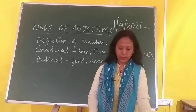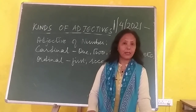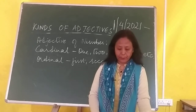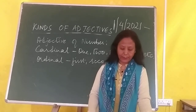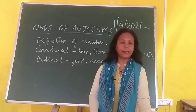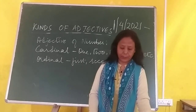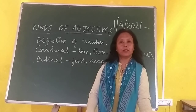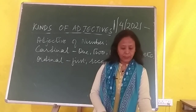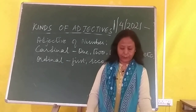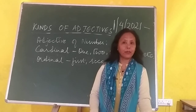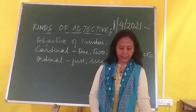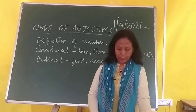Indefinite adjectives are: all, no, some, any. Then we have distributive adjectives, which refer to each one individually — every, either, neither are all distributive adjectives. Like 'each girl got a prize' — that is a distributive adjective. 'Everyone should be present in the school' — 'everyone' is a distributive adjective.